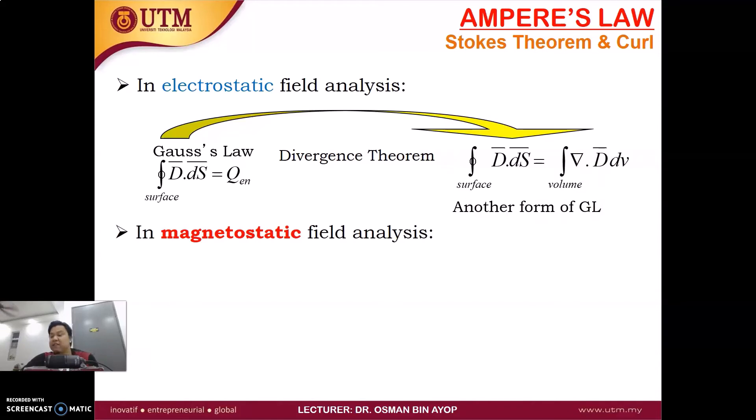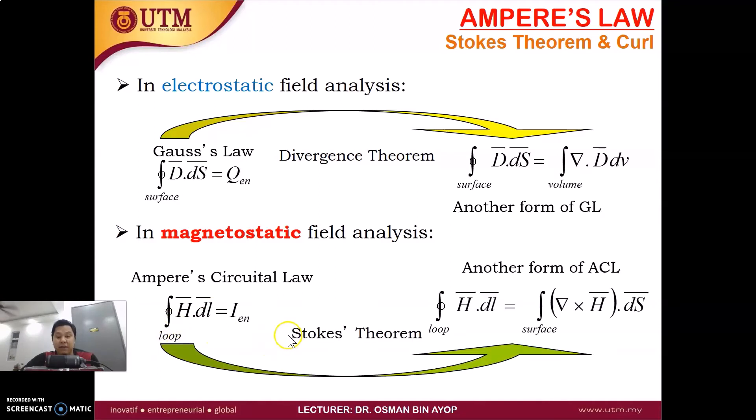So in magnetostatic field analysis is quite similar. When we have the closed integration of H dot dl, this is basically the line integrations. And then using the Stoke's theorem, we can relate the line integration or loop integration to the surface integration. From here, we have H dot dl. The dot product here, we have a cross product. Curl H dot dS.